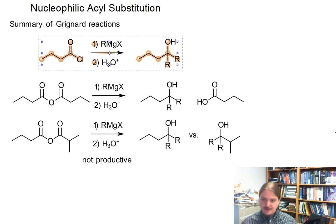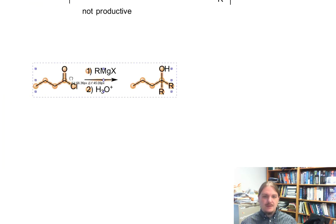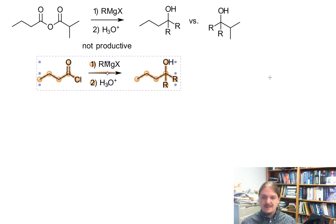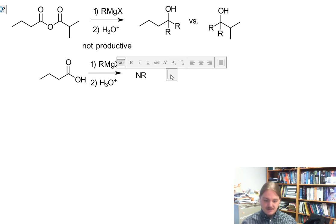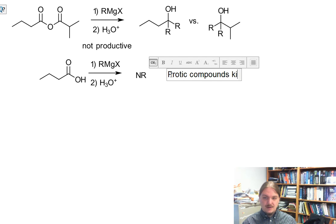Go back and grab the acid chloride and make it a carboxylic acid. This is essentially an anhydride and you get destruction of the Grignard reagent. Protic compounds kill Grignard reagents.